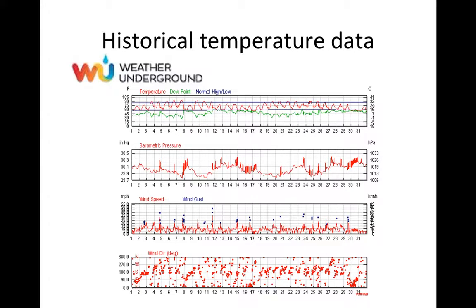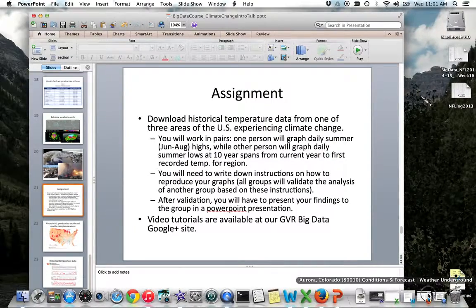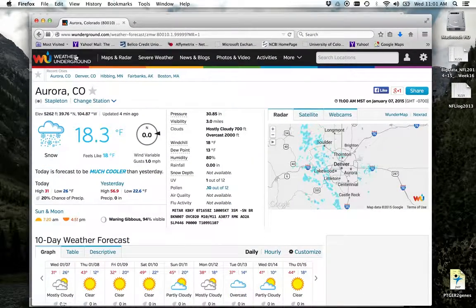So where are we going to get this temperature data? A site that I normally go to is Weather Underground. You can get this from various other sources, but I kind of prefer this one. We're going to go to this website, put in the cities that we're interested in, and then download that data. Once we've downloaded it, we're going to analyze it at different time points and see if we see any trends with time. I've already got the Weather Underground data site up.